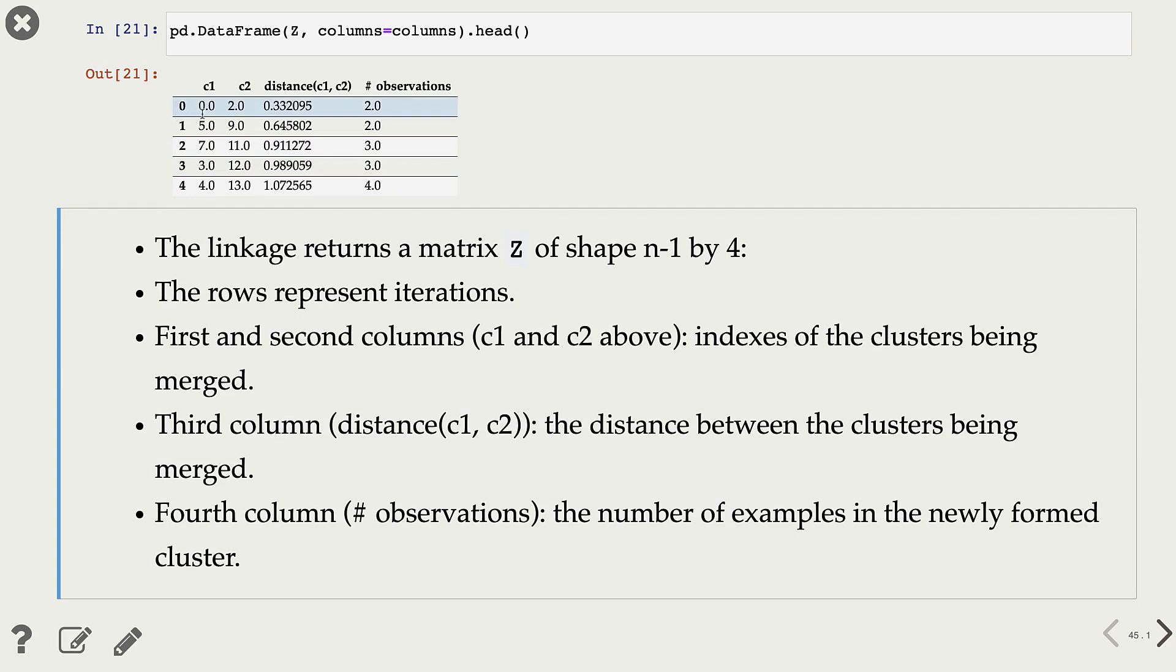And what are these columns? So in each iteration, the first two columns, for instance, these are the indices of clusters being merged in that iteration.